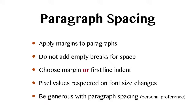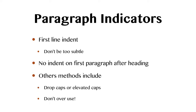You can apply margins to paragraphs. Don't add empty breaks for space — don't hit return between paragraphs because that space may collapse in the eBook. Use margin or first-line indent to define a paragraph. Be generous with paragraph spacing — with eBooks you don't have paper limitations, so use the space generously. First-line indent is a traditional way to indicate a paragraph, but make it clearly visible. You don't want an indent on the first paragraph after a heading. You could also use a drop cap or elevated cap to indicate the beginning of a section.